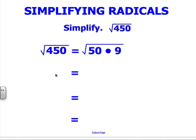Here we have the square root of 50 times 9. I know 9 is a perfect square number. And I know 50, I know that I can continue to find factors that multiply together to get 50.